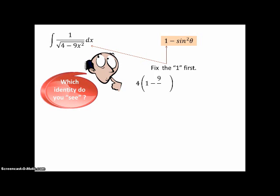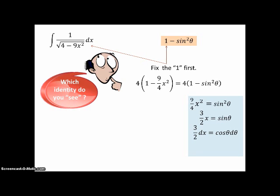In order to match it up we'll fix the 1 first. We need to have a 1 not a 4. So we factor the 4 out and then we want the inside of the parentheses to equal 1 minus sin²θ. So 9/4 x² has to equal sin²θ. Before you compute dx and dθ let's take the positive square root of both sides and that'll give us 3/2 x equals sinθ which means that 3/2 dx equals cosθ dθ. This is why it gets more complicated because we're replacing 3/2 dx with something with a trig function in it.